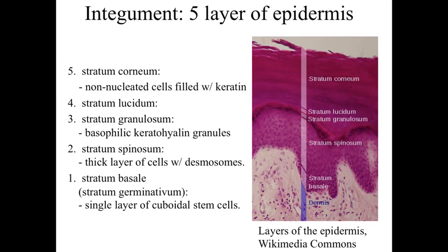Focusing in on the epidermis, we can see that there are five layers. We start at the lowest level — the bottom of the epithelium, where it sits upon the basement membrane or basal lamina, right above the dermis. That base level is called the stratum basale, or stratum germinativum.